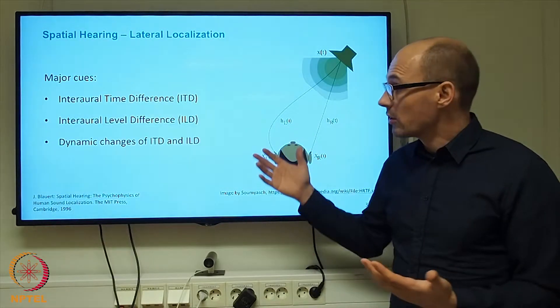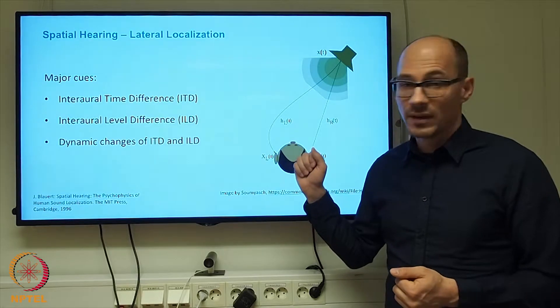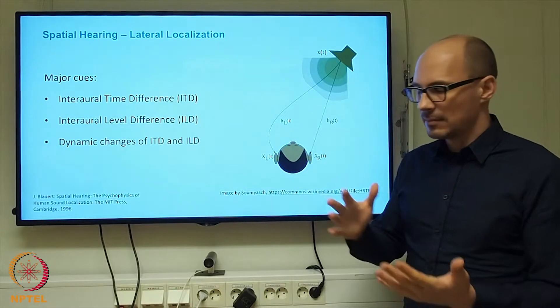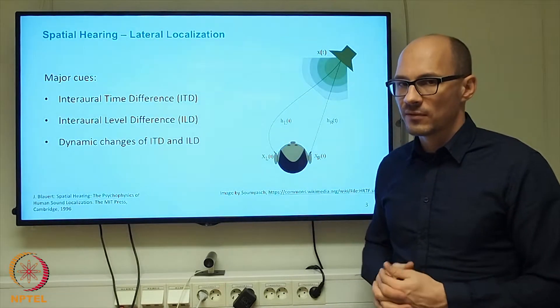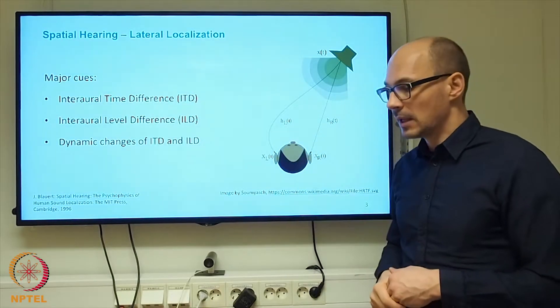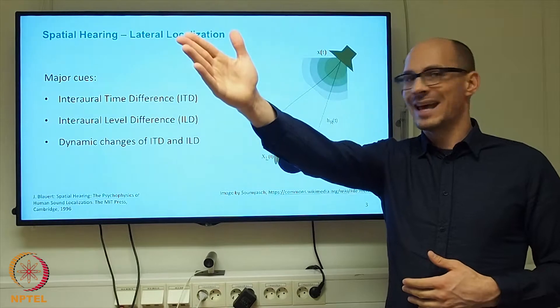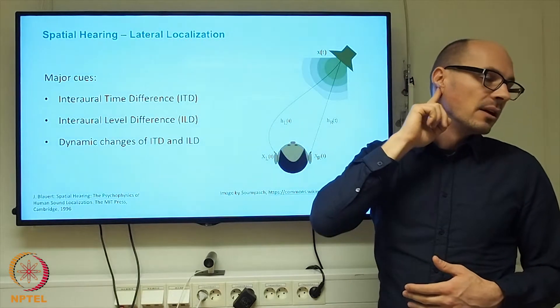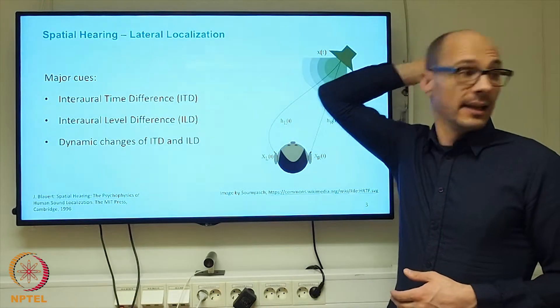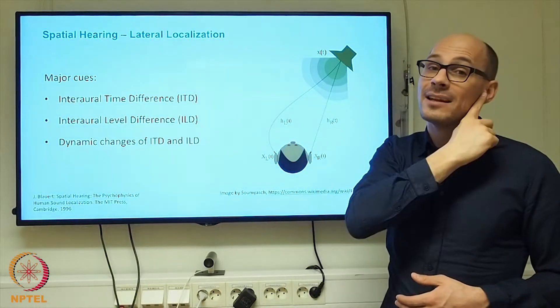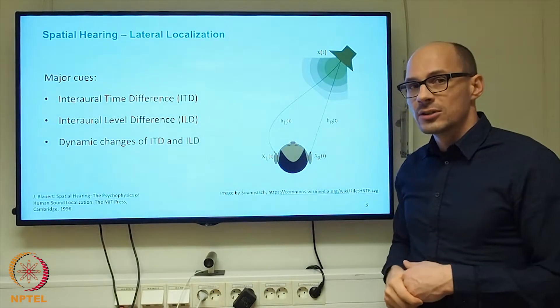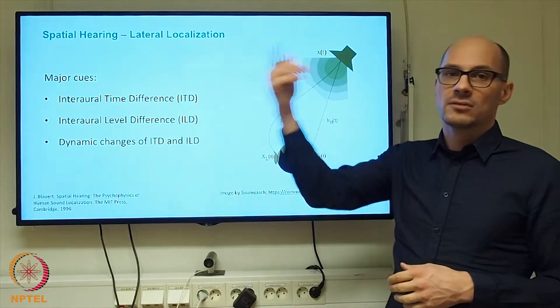In static scenarios, if you allow changes of the head orientation, then the dynamic changes of these interaural differences, of the time and the level difference, are also very strong cues for localization. For example, for differentiating front and rear. Imagine a sound source is in front of me and I turn my head to the left, then the signal at this ear will be leading over the other one. Whereas if the sound source is behind me and I turn my head to the left, then it will be the other ear that will be leading.